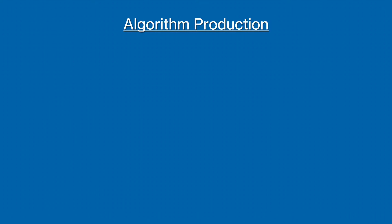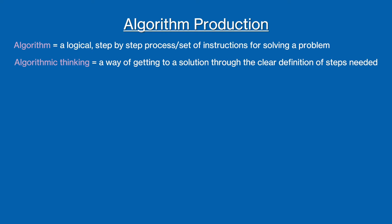Now let's have a look at what is involved in developing algorithms. As we mentioned in the previous video, an algorithm is a logical step-by-step process, or set of instructions, used to solve a problem. Algorithmic thinking is a principle of computational thinking. It's thinking about a problem in terms of how we get to a solution through the clear definition of steps needed. For a more in-depth explanation on algorithmic thinking, have a look at my other video on computational thinking.